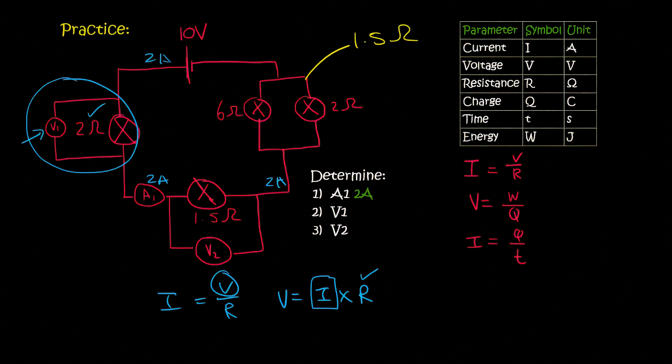The only time that you can't use the 2 amps is if you are somewhere in one of these two branches. Because maybe 1.5 amps goes this way, and 0.5 amps goes this way. So that the total is 2, but you don't know how much goes through each one.